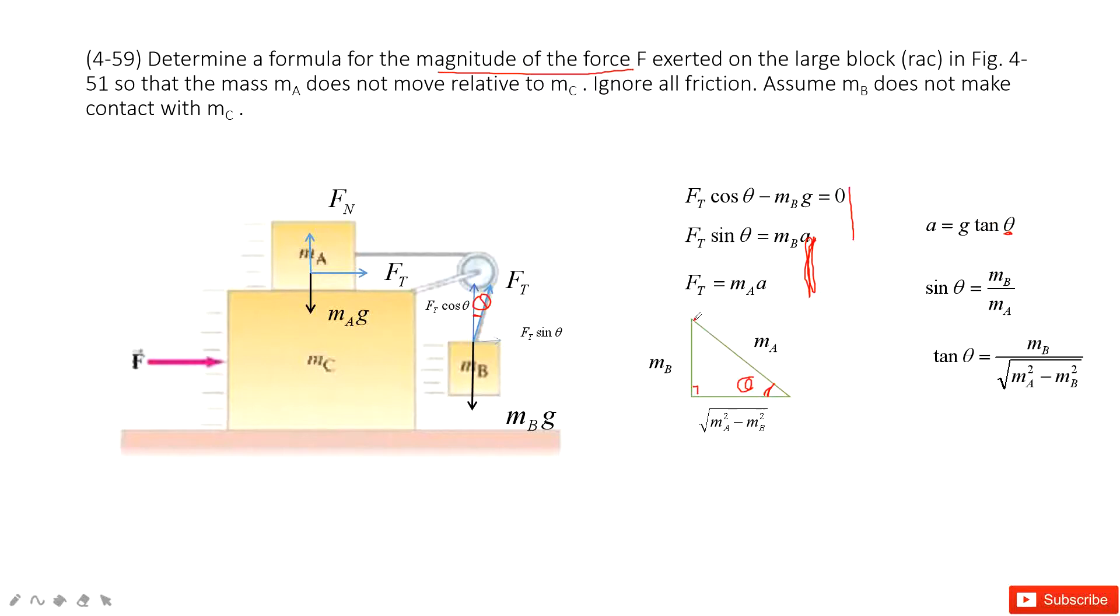Tangent theta? Sure. Very easy. Because tangent theta is this side divided by this side. So MB divided by squared MA squared minus MB squared. Then we input tangent theta inside, we get the acceleration.